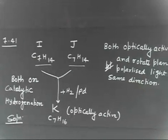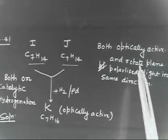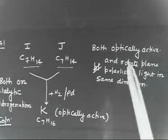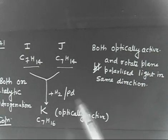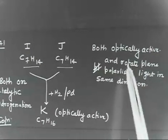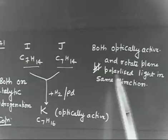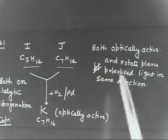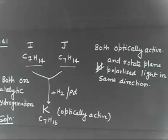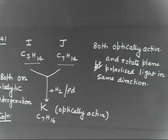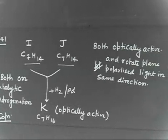Now both compounds are optically active. They both rotate the plane-polarized light in the same direction. Both are optically active and both rotate the plane-polarized light in the same direction. This means if one is rotating the plus side, the other is also rotating the plus side — one is dextrorotatory and the other is also dextrorotatory.